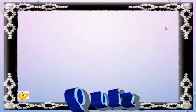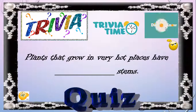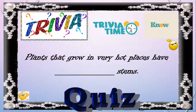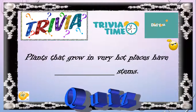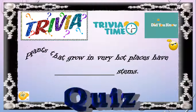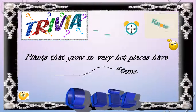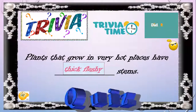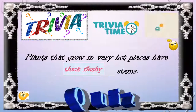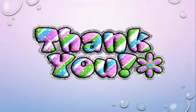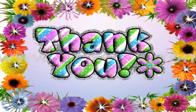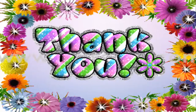That will be all for today. Now it's trivia time: plants that grow in very hot places have — blank — stems. Yes, plants that grow in very hot places have thick, fleshy stems. That will be all for today, students. Don't forget to wash your hands after using the gadget. Thank you, everyone. Have a very nice and blessed day. Allah Hafiz.